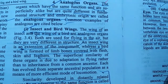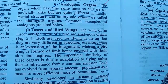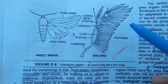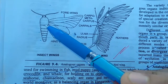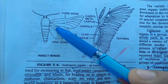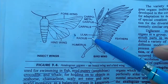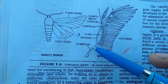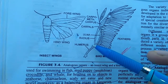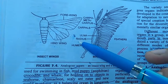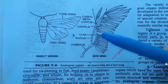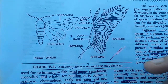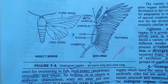Let's talk about an example such as the wings of insects and birds. The wings of insects are the extension of the skin and cuticle, while the wings of birds are bony in nature and are modifications of the forelimbs. They look similar in function, helping in flying, but they have different origin and development. So they represent the analogous organ.